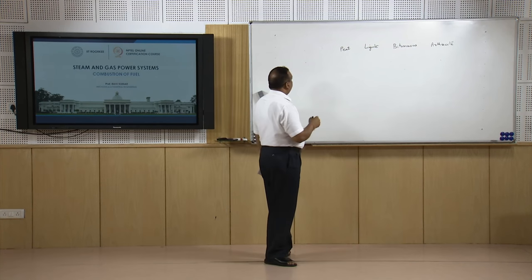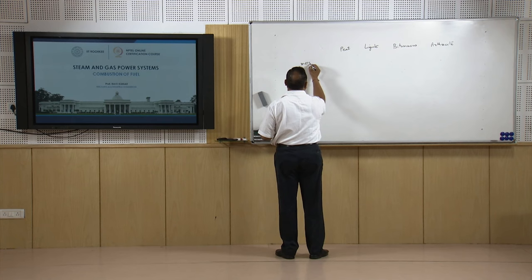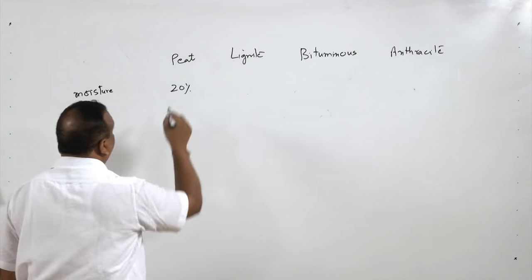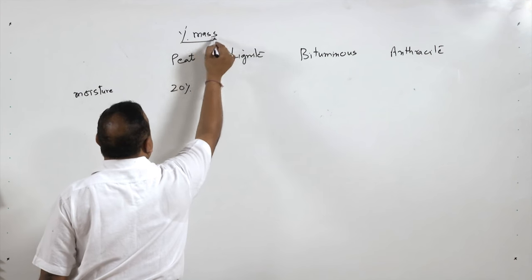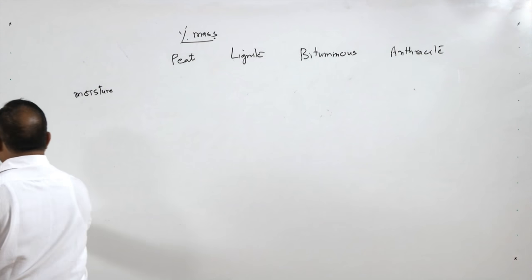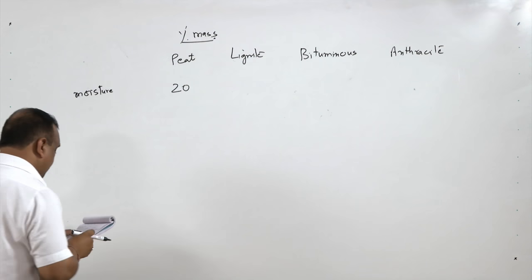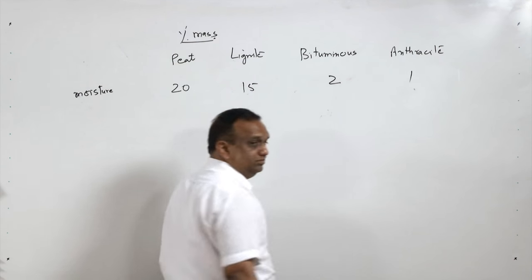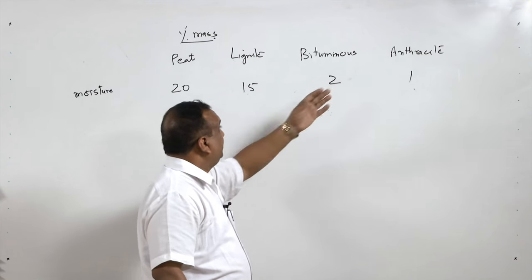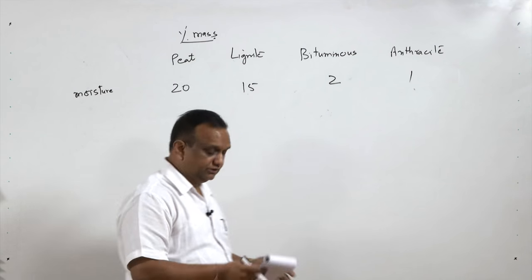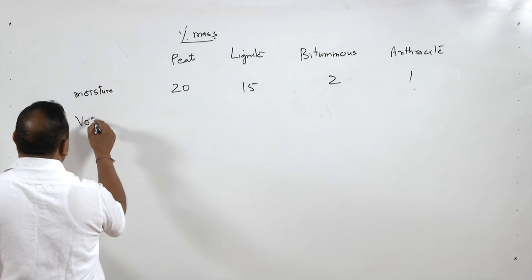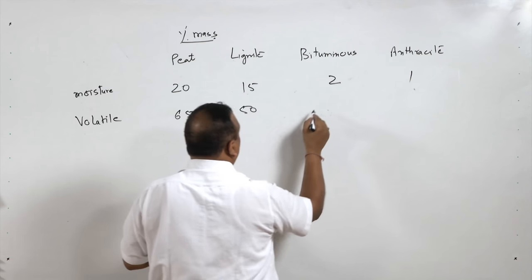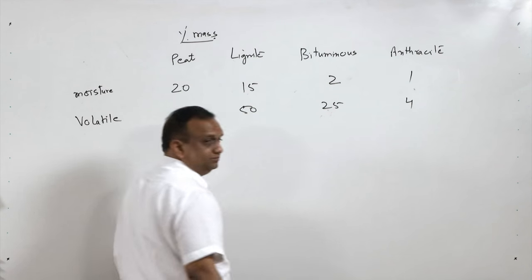Let us take the case of moisture, in percentage by mass. Peat coal has approximately 20 percent moisture, lignite 15 percent, bituminous 2 percent, anthracite 1 percent — almost dry. For volatile material: peat 65 percent, lignite 50 percent, bituminous 25 percent, and anthracite only 4 percent.